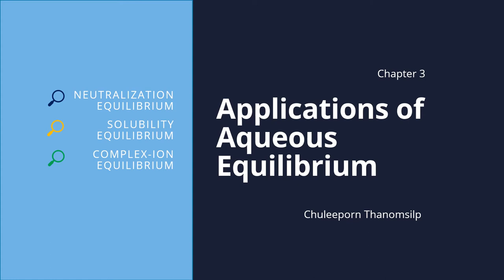Sawaddee ka. Now we are on chapter 3, application of aqueous equilibrium. Still on equilibrium topics. So we're going to still use the equilibrium constant K, but this time we're going to try to explain something more than just reaction shift left or right. This chapter we will look at subtopics on neutralization equilibrium, solubility equilibrium, and complex ion equilibrium.